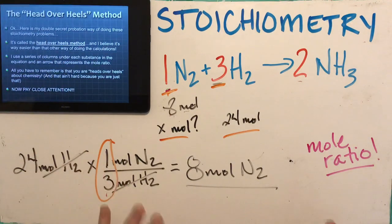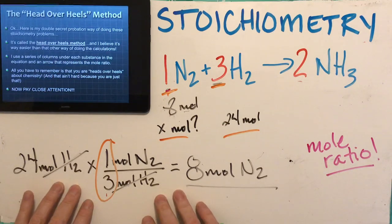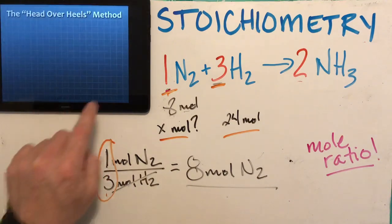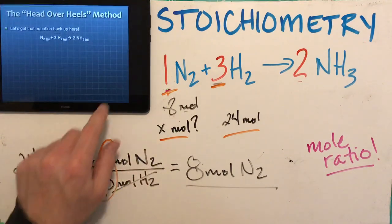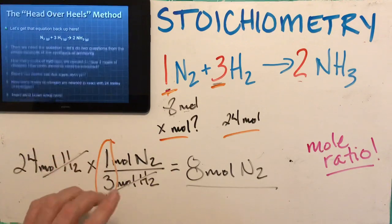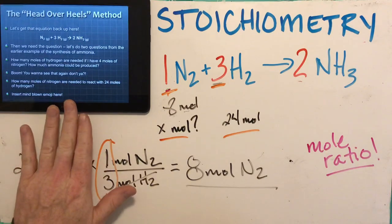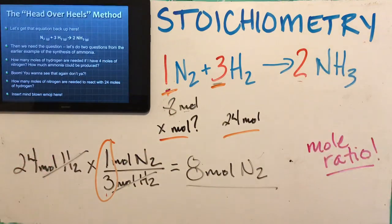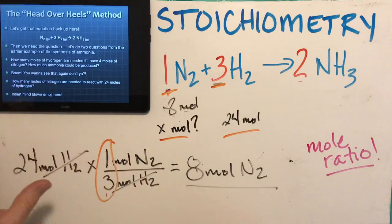Pay close attention to how this works. If you get this and turn it in as an answer, I'm fine with that — this way you'll never mess up the mole ratio. Let's get that equation back up here and do some stoichiometry using the head over heels method.